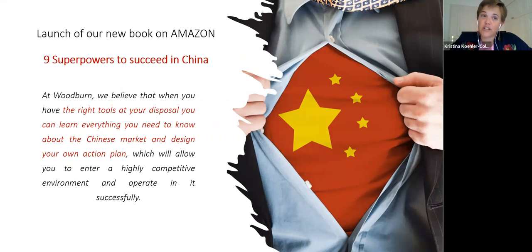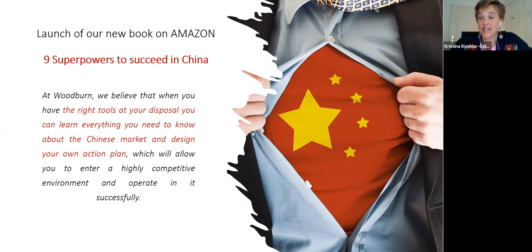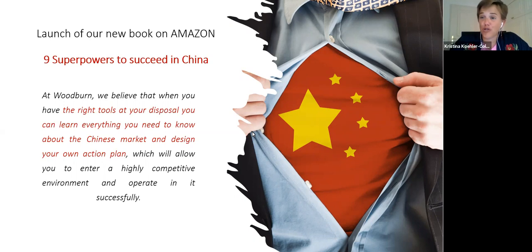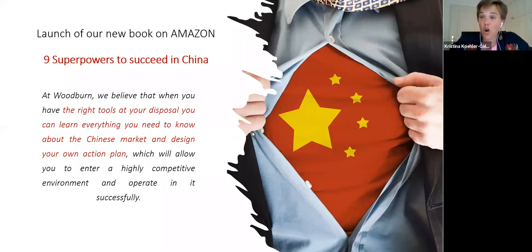I've launched a book on Amazon earlier this year called The Nine Superpowers to Succeed in China. If you're at the stage of pre-investment into China and looking to get your entry processes done correctly, this book will be a super helpful tool. It provides nine key tools and disciplines to help you avoid the most common obstacles in the Chinese market, and guides you to create your own action plan and checklist. The book is available on all Amazon websites in hardcopy and on Kindle — just search Nine Superpowers to Succeed in China.